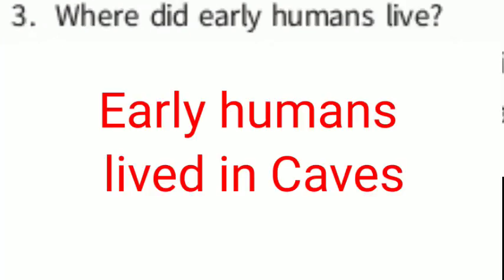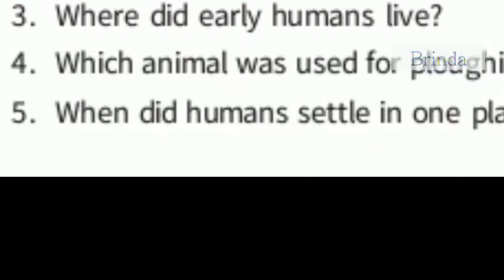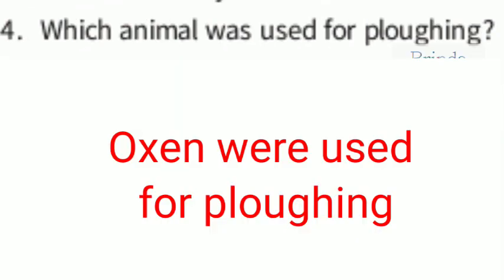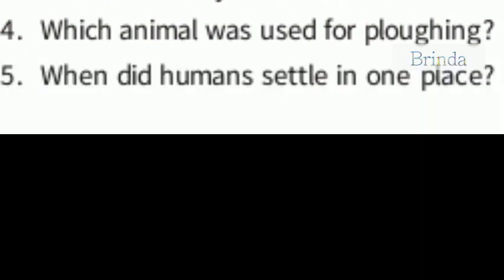Where did early humans live? Early humans lived in caves. Next: which animal was used for plowing? Oxen were used for plowing.